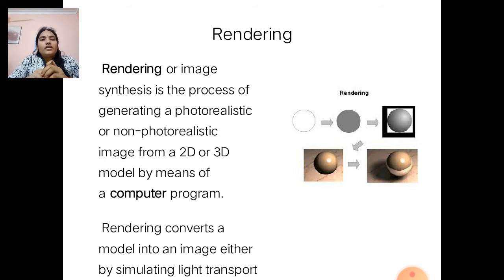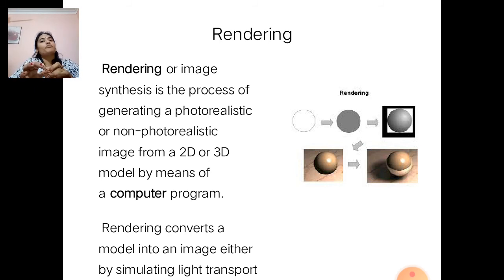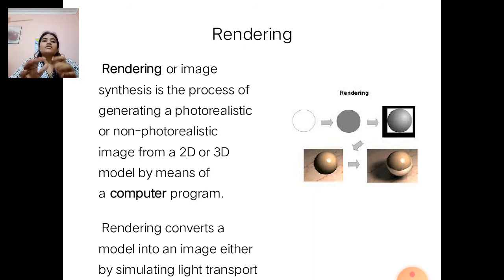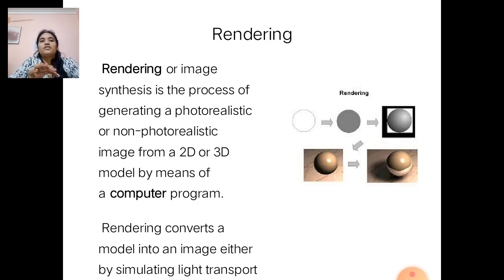Rendering, or image synthesis, is the process of generating a photorealistic or non-photorealistic image from a 2D or 3D model by means of a computer program. Rendering also converts a model into an image either by simulating light transport. For example, first we draw a circle, then we color this circle, then we apply different types of effects — this process of converting the circle into a photorealistic image is called rendering.